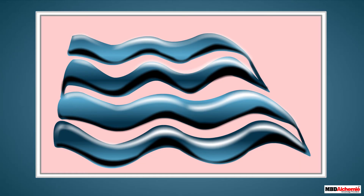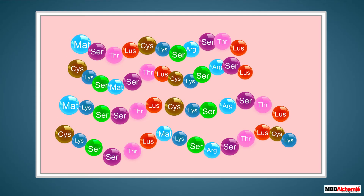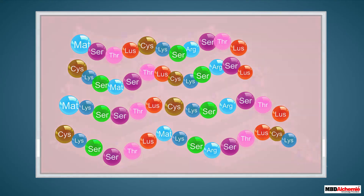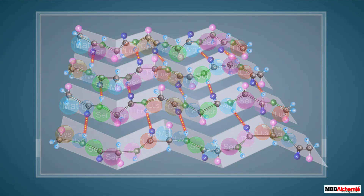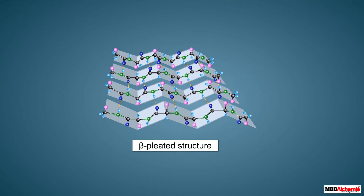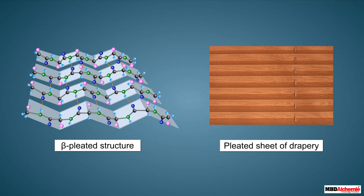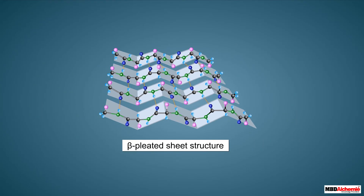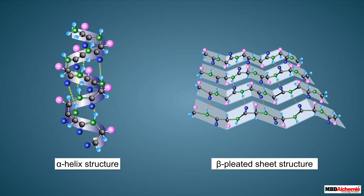Another type of secondary structure is formed when the polypeptide chains are stretched to maximum extension and then folded so that different strands lie alongside each other. This is called the beta pleated sheet structure. The different strands are held together by intermolecular hydrogen bonding between the amino acids of two different strands. This structure looks similar to the pleated folds of drapery.